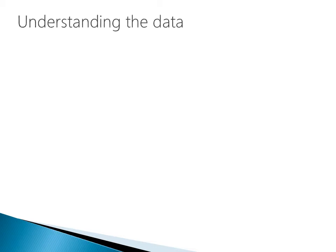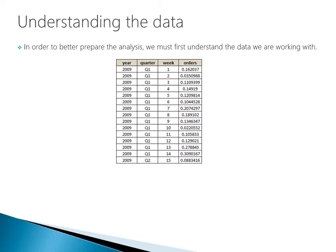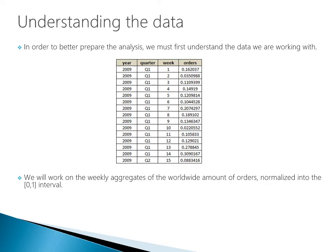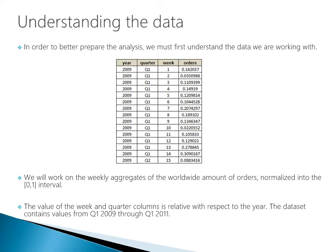Before we begin, let's understand the data. The raw input data is simple — four columns: year, quarter, week, and amount of orders. We're working with weekly aggregates of worldwide orders normalized between zero and one. The week and quarter columns are relative with respect to the year, and the dataset contains values from Q1 2009 through Q1 2011. This analysis is constructed using the R language, and I do have that code readily available.